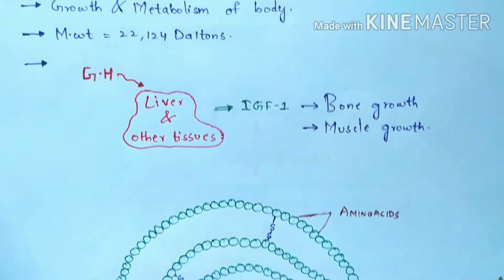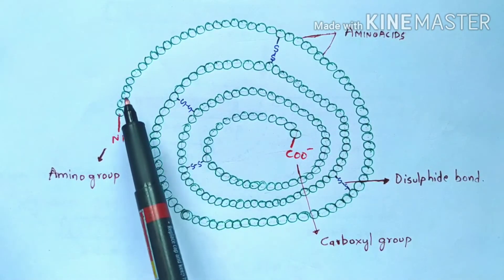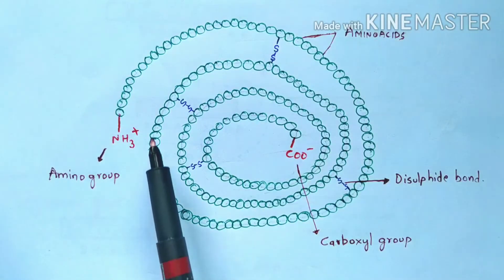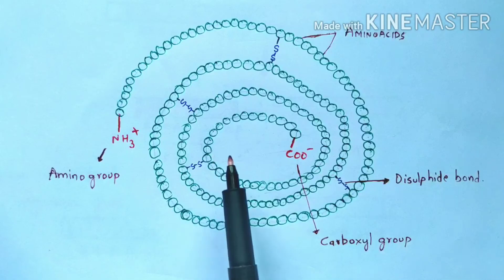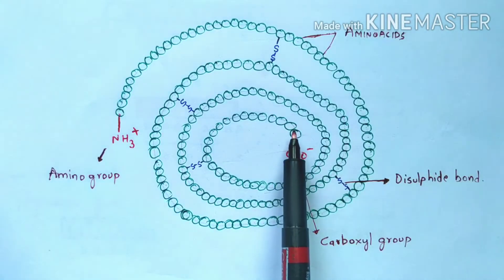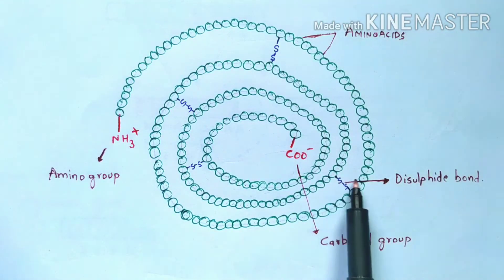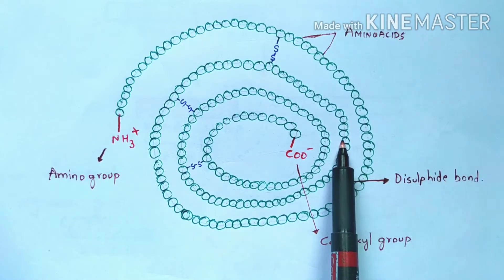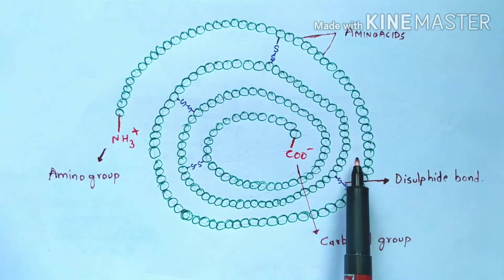Now let us look at the structure of the growth hormone. As mentioned, it is made up of 191 amino acids — represented here by the green circles. If you count them, there are 191 amino acids total. It consists of an amino group at one end and a carboxyl group at the other end. The blue color represents the disulfide bond, which connects the amino acid chains and also maintains the overall structure of the growth hormone.